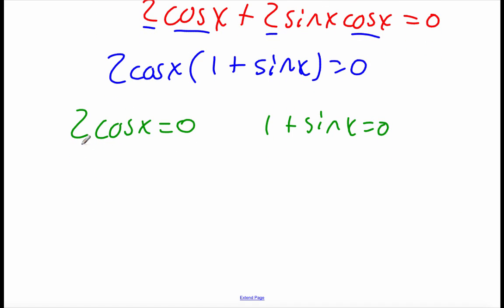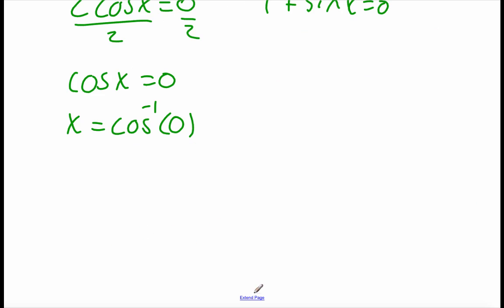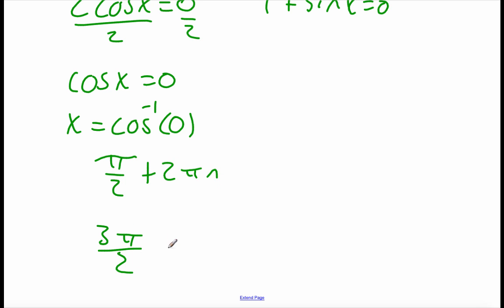Solving the cosine factor on the left, we divide the 2 over to the right-hand side, giving us cosine of x equals 0. Rewriting as an inverse, x equals the inverse cosine of 0. Checking the unit circle for where cosine equals 0, that happens at pi over 2 and also at 3 pi over 2. Since we're not given a specific interval, we add 2 pi n to each for the general form.